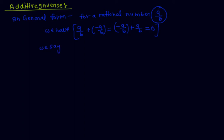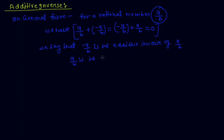So we say that minus a by b is the additive inverse of a by b, or in vice versa form, a by b is the additive inverse of minus a by b. In short, if any number is added to a given rational number and the addition is equal to 0, then that number is the additive inverse of the given number.